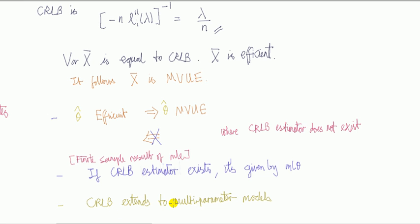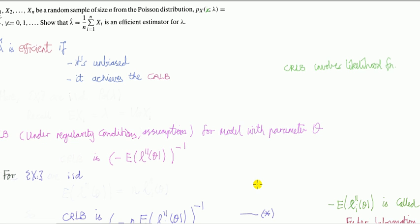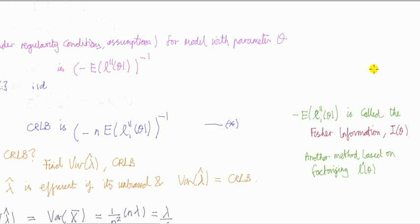Another remark is that the Cramér-Rao lower bound extends to multi-parameter models. Here we just give a definition for one parameter model but it extends to multi-parameter models. Let's notice in passing that the Cramér-Rao lower bound involves computing the log likelihood. This expression—minus the expected value of the second derivative of the log likelihood of the i-th observation—is called the Fisher information.